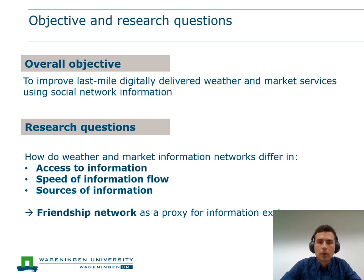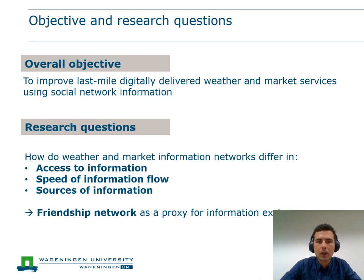The friendship network was used to represent information exchange capacity, assuming that farmers who have a lot of friends also share information with each other on a personal, informal level. We hope to identify people, also called nodes in network analysis, who are likely to spread information from the apps widely through person-to-person diffusion.